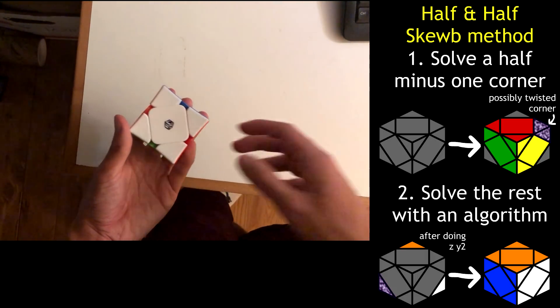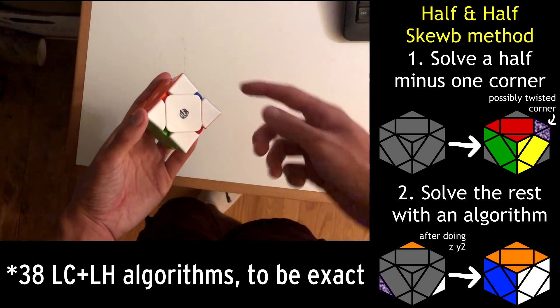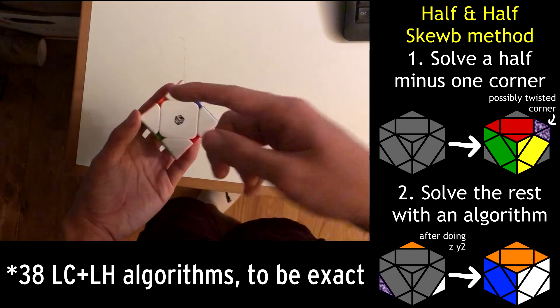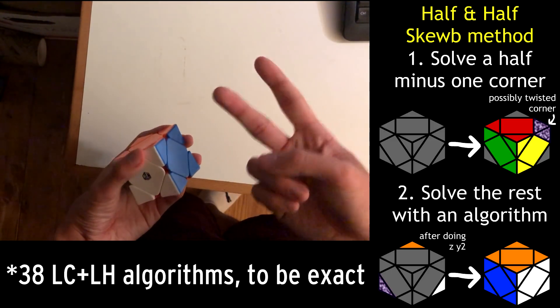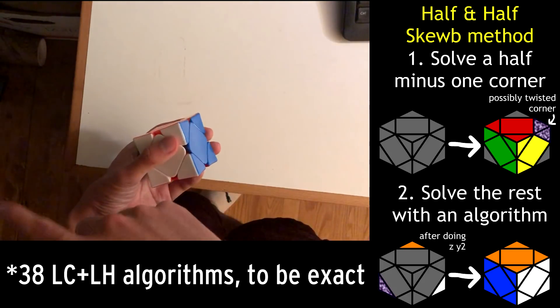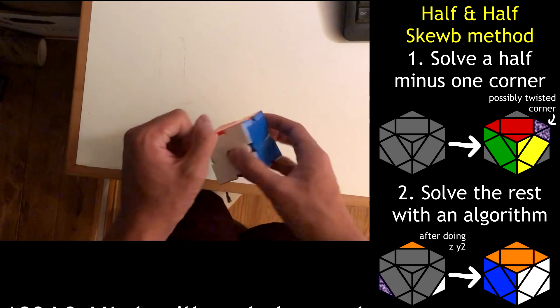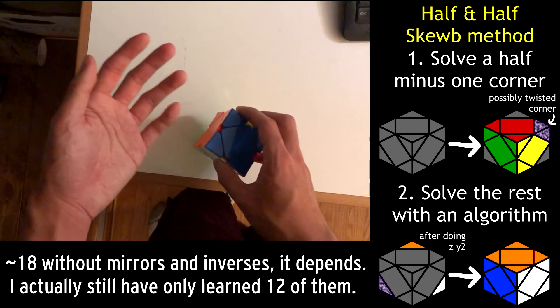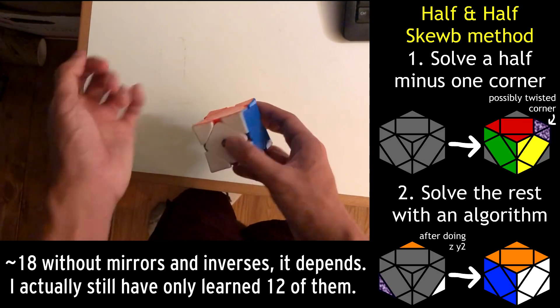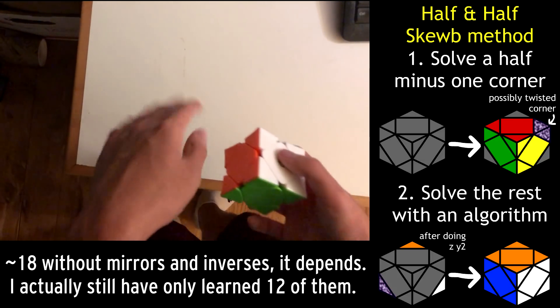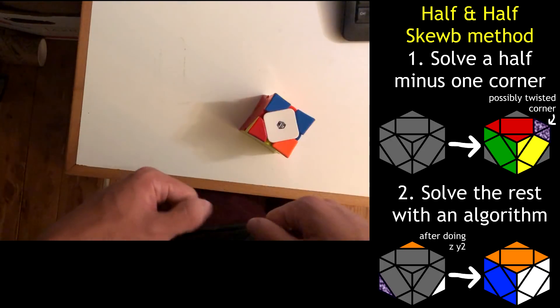For reasons I'll explain later, there's actually only 30-something last half plus corner algorithms for step two. And most of them are inverses or mirrors of the other, so you really only have to learn, I think, like 12 or maybe 16. It was really fast for me, so it can't be that high.